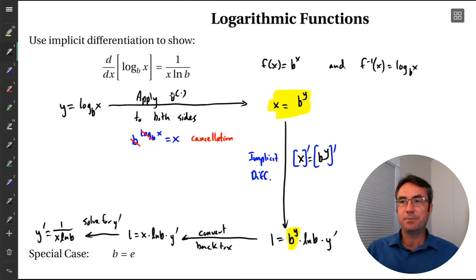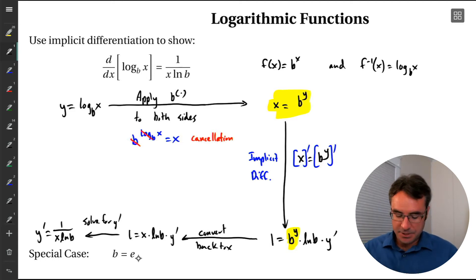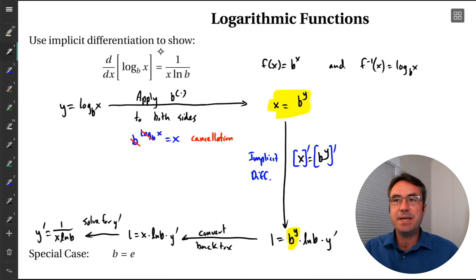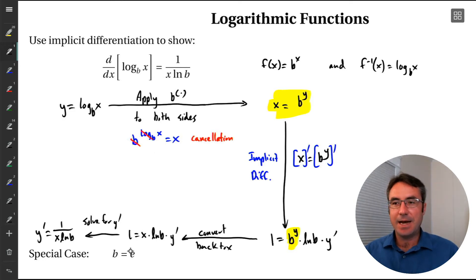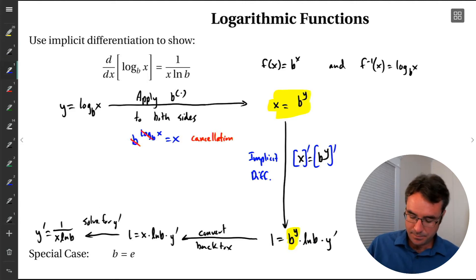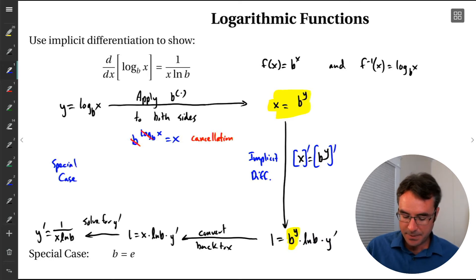And there we go — we just proved that result. Not too bad. There's a special case here: when the base b is e, our natural exponential. This is probably the one we use most often.